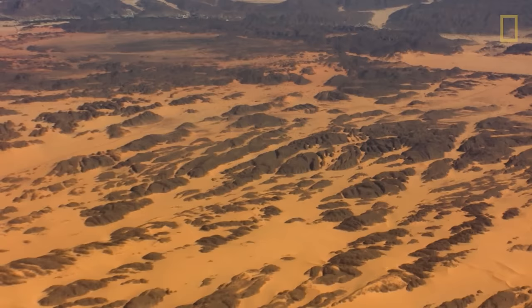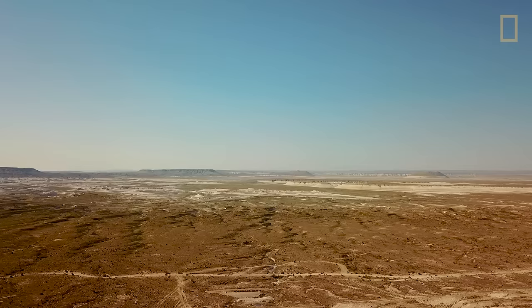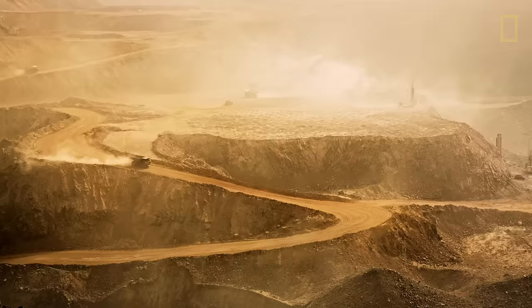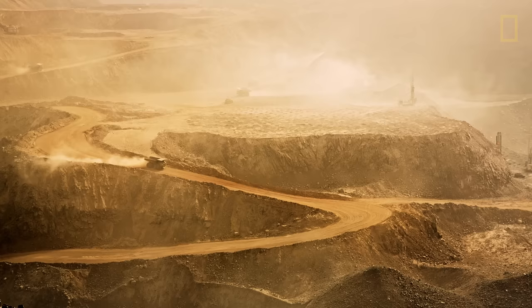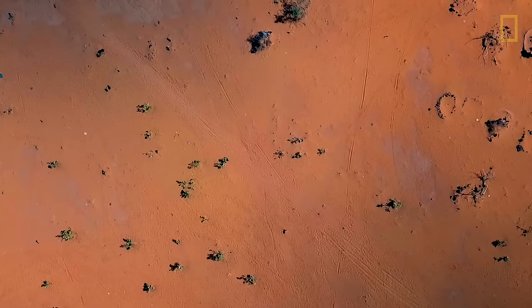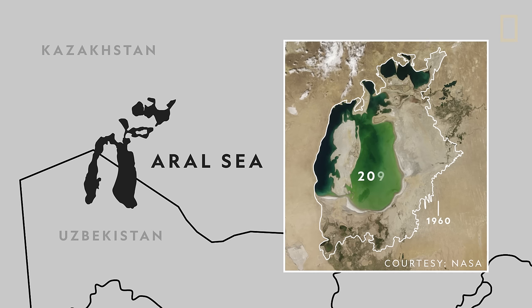Additionally, new desert areas are beginning to form through desertification. This phenomenon occurs when factors such as deforestation, climate change, and resource mismanagement degrade the biological productivity of a region, thereby creating a desert. For instance, in Central Asia, poor irrigation practices and excessive water usage dried up the Aral Sea and formed the youngest desert on the planet.